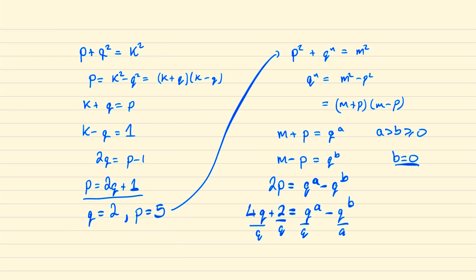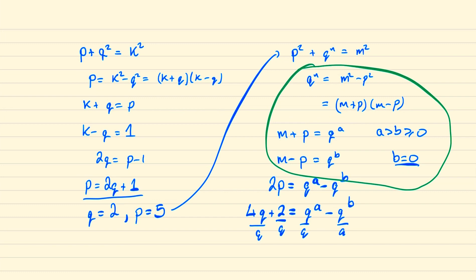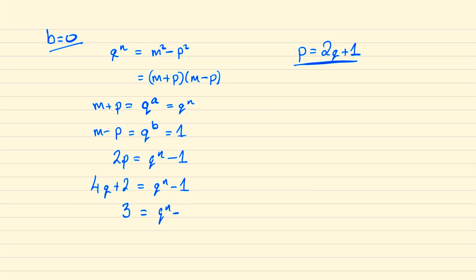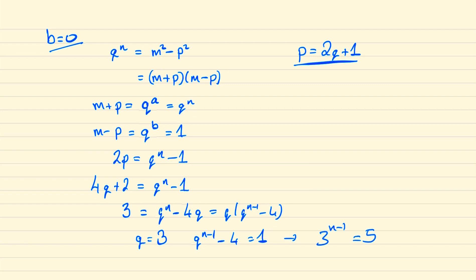Now we consider the case when b = 0. When b = 0, m - p = 1 and qᵃ = qⁿ. Following a similar method, subtracting the two equations shows that 2p = qⁿ - 1. Substituting p = 2q + 1 and rearranging gives 3 = qⁿ - 4q. Since we can factor out q on the right side, it follows that q must equal 3. But then qⁿ⁻¹ - 4 = 1, meaning 3 to some power equals 5, which is nonsense.